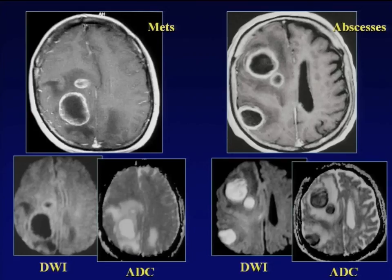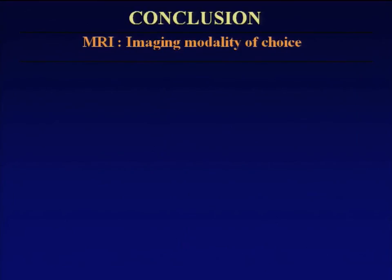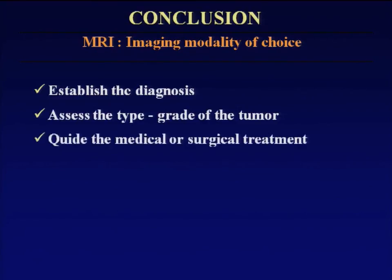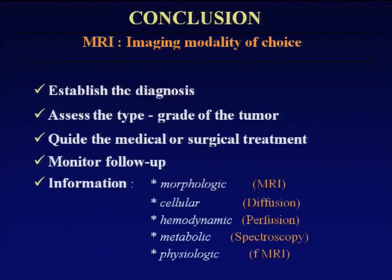To conclude: MRI is the imaging modality of choice to detect and characterize a brain lesion, establish the diagnosis, assess the type and grade of the tumor, guide medical or surgical treatment, and monitor follow-up. Nowadays the radiological diagnosis is not strictly just to detect or identify a tumor — we can give information about morphology, composition, hemodynamics, metabolism, and physiology. Thank you very much.